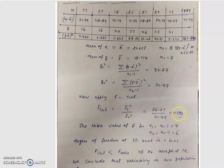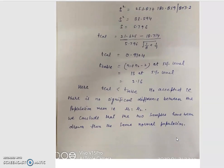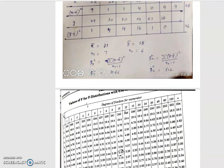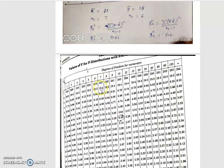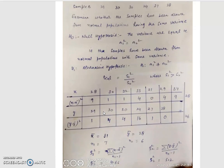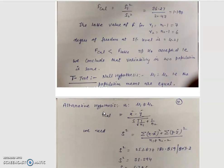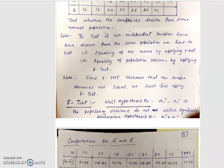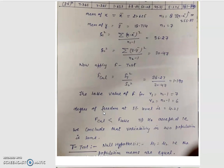Since s1² is greater than s2², F calculated is 1.109. Now we find the tabulated value: nu1 equals n1 minus 1 and nu2 equals n2 minus 1, giving values of 7 and 6. Using the F table with values 7 and 6, the F table value is 4.21. Since F calculated 1.109 is less than F table value 4.21, H₀ is accepted — we conclude that the variance in the two samples is the same.